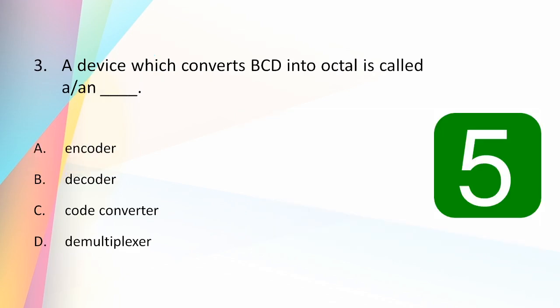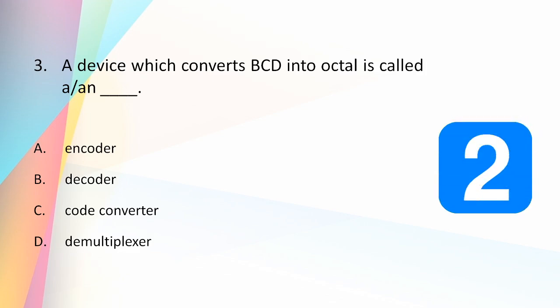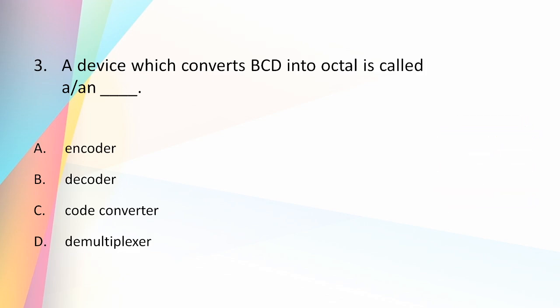A device which converts BCD into octal is called: an encoder, decoder, code converter, or demultiplexer? The answer is a decoder. A decoder is also a combinational circuit which has many inputs and many outputs. A decoder is used to convert from binary to other codes such as binary to octal, binary to hexadecimal, and BCD to decimal.